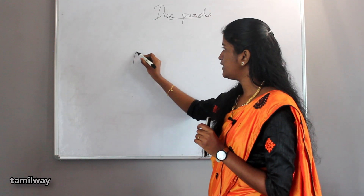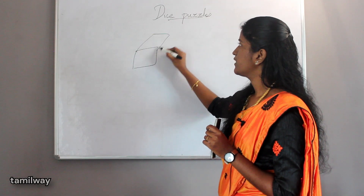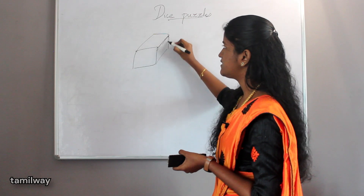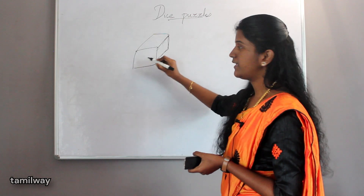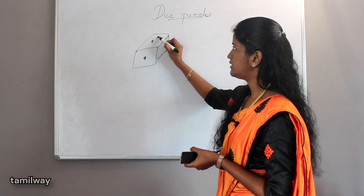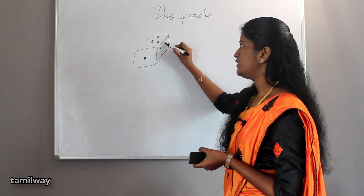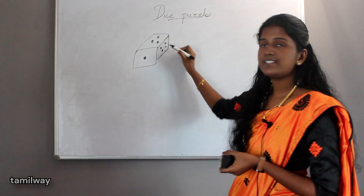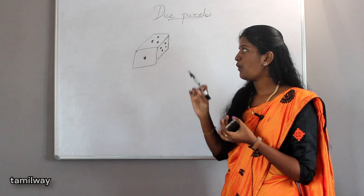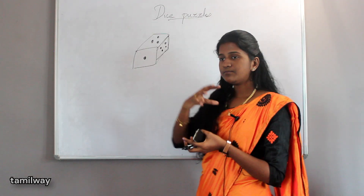Dice is something you can understand. We use it like snakes and ladders. One point, one, two, three — there are different sides with different digits. If we cut the cube and look at the points, we use this as a reference.